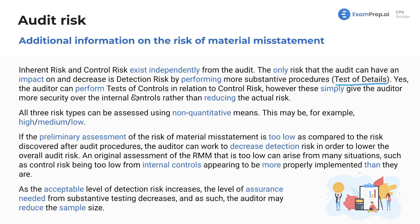The auditor can perform tests of controls in relation to control risk; however, these simply give the auditor more security over the internal controls rather than reducing the actual risk. This is worth repeating because it comes from multiple choice questions you'll see on the exam. All three risk types can be assessed using non-quantitative means — such as high, medium, and low — rather than just numbers.